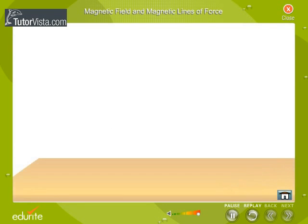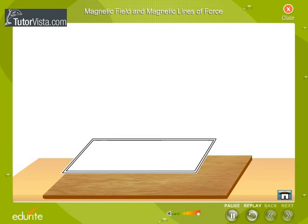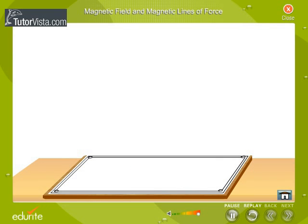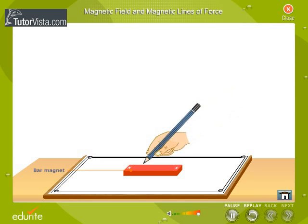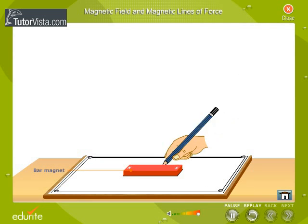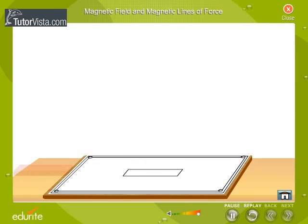Fix a sheet of paper on a drawing board. Place a bar magnet on the sheet of paper. Trace the boundary NS of the bar magnet. Place a compass at the north pole.